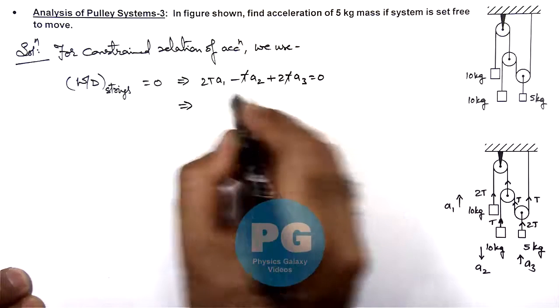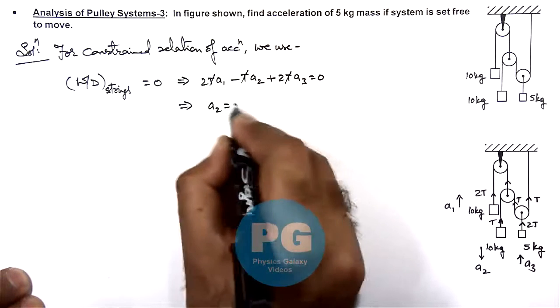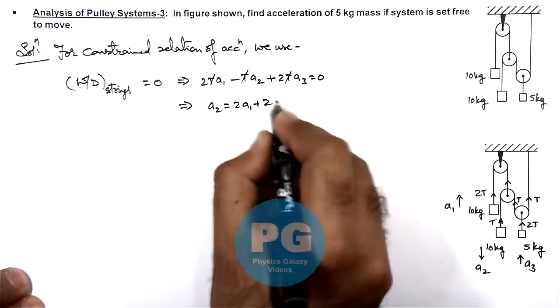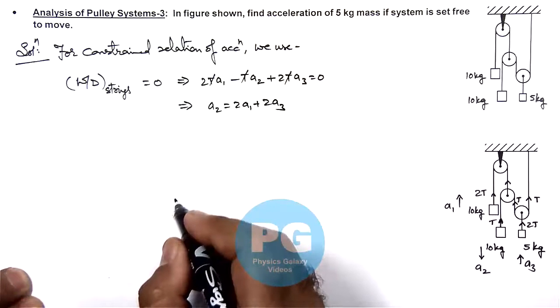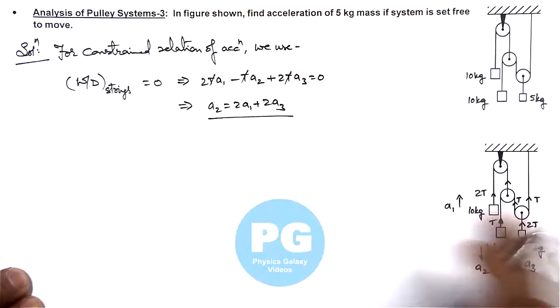And is resulting as the relation in acceleration as t gets cancelled out, and is giving us a2 is equal to twice of a1 plus twice of a3. Now this is the constraint relation of acceleration we are having.